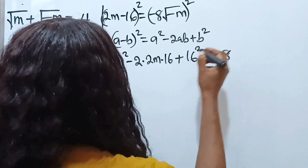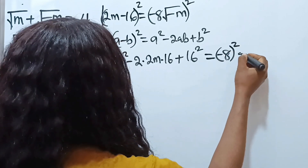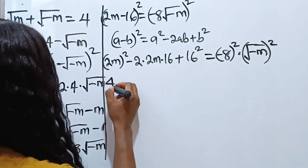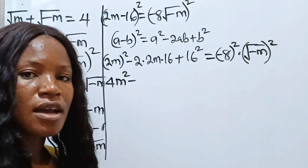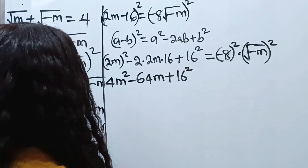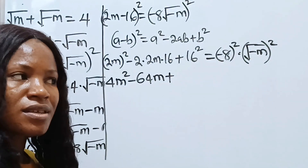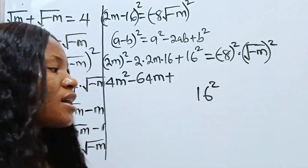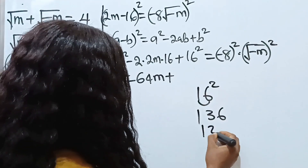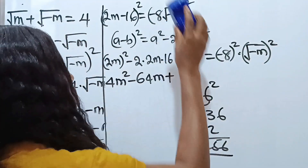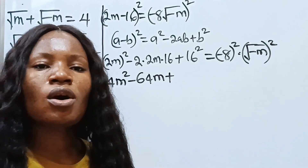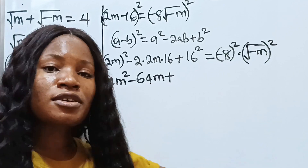2m squared gives us 4m squared. Now 16 squared — using a math trick: 6 squared is 36, 1 squared is 1, and 1 times 6 is 6, double of 6 is 12, so 16 squared equals 256. I have three videos on math tricks in this channel from about one to two months ago — search the channel to find them.